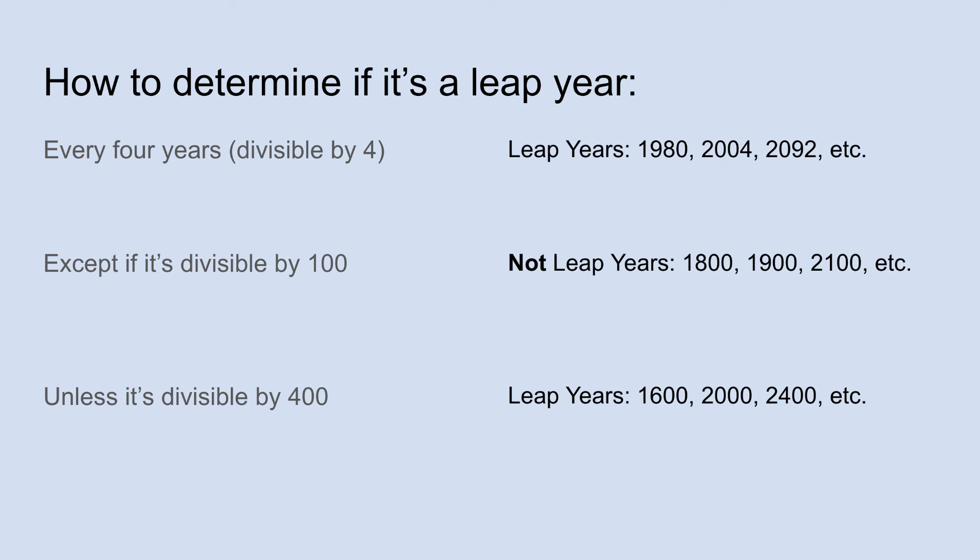But to accommodate the extra three days over the course of 400 years, we decided that every 100th year is not going to be a leap year. So 1800, 1900, etc. — these are not leap years. But it's okay if the year is divisible by 400. So 1600, 2000, 2400 — these are leap years. In this way, we accommodate the extra three days.